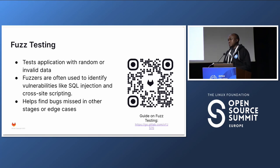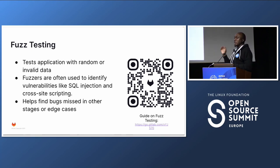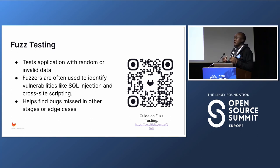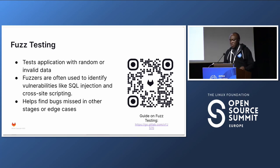Fuzz testing — SAST statically scans your application, DAST dynamically scans with expected data. But what about random, invalid data? Fuzz testing enters random, invalid data into your application to test how it responds. It's called fuzzing — entering 'one plus one,' random inputs — to detect things like cross-site scripting and SQL injection that can't be predicted by SAST or DAST. It identifies unpredictable scenarios that might occur in production.